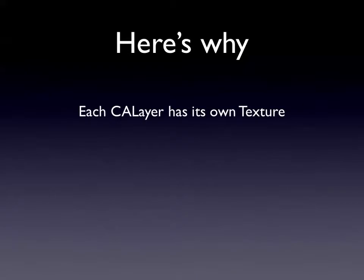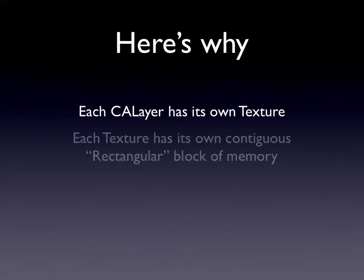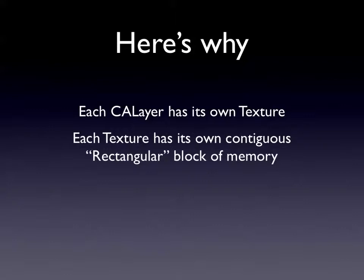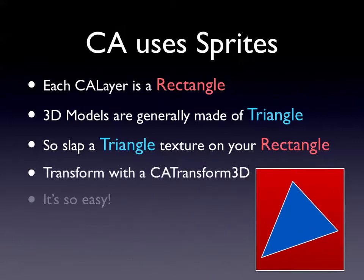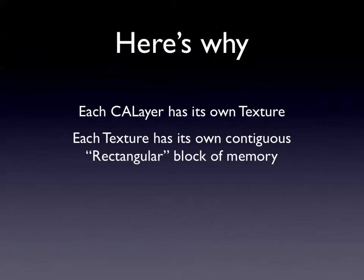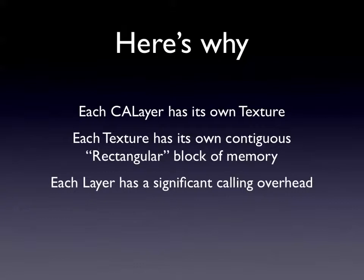I was joking for that entire thing. Here's why that's awful: each CA layer has its own texture, which means a lot of context switching and overhead on your graphics card. Each texture has its own contiguous rectangular block of memory, which means you can have a lot of wasted space around that triangle. And each layer has a significant calling overhead — so you're doing operations on 16 floating-point values maybe 30 or 40 times for each triangle, as opposed to if you pushed it all off into the GPU. That's kind of the worst example of where you shouldn't use core technologies and where you should be using OpenGL.